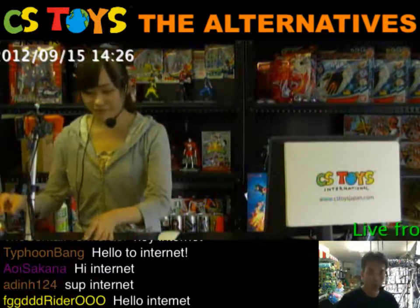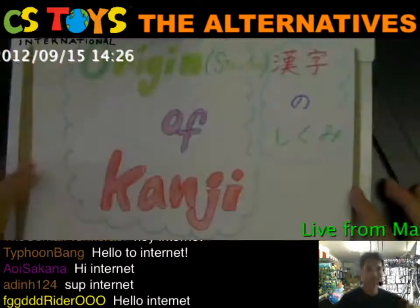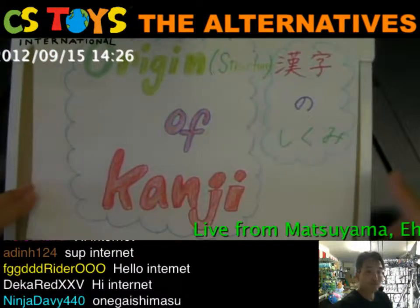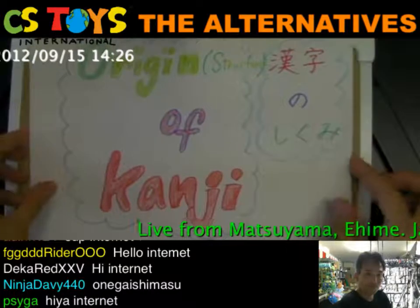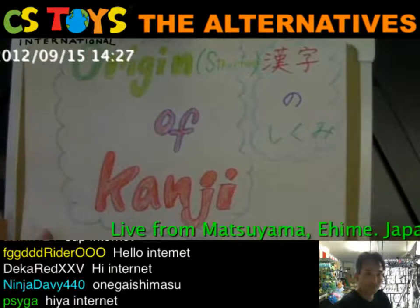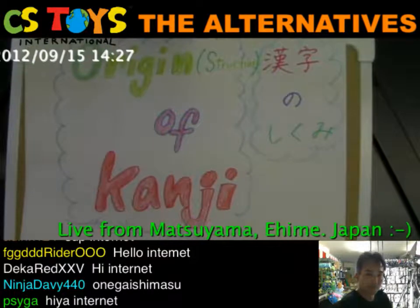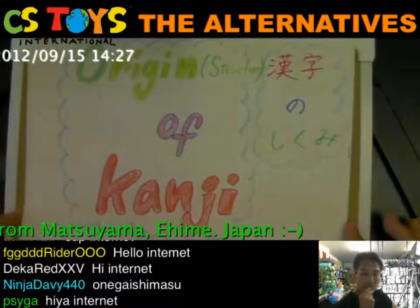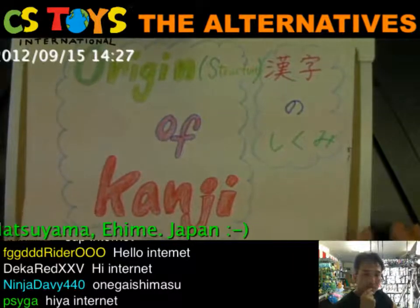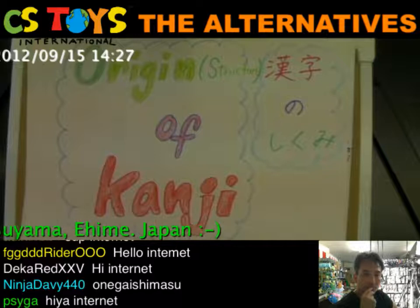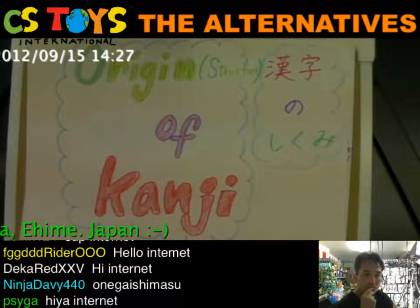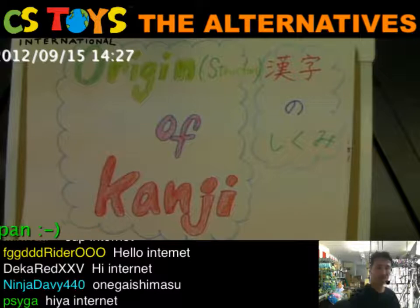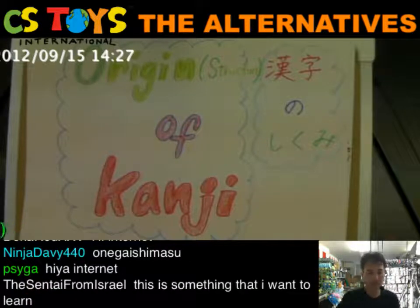Okay, here we go. Today's theme is the origin or structure of kanji - kanji no shikumi. There are several types or patterns of origin of kanji, but today I'll introduce one of them, which I think is interesting and which helps you understand and memorize the kanji.